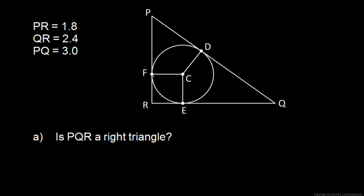And we're given a circle here inscribed in the triangle, and at the points where the circle touches the triangle, some segments are drawn from the center of the circle. So CD, CE, and CF. And we're asked some questions. First, is PQR a right triangle?